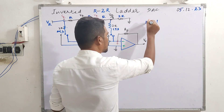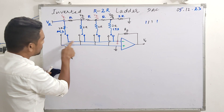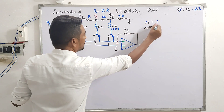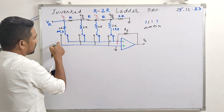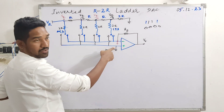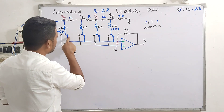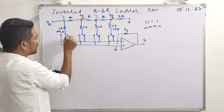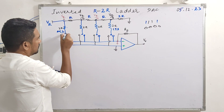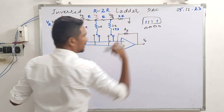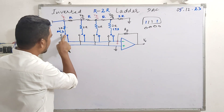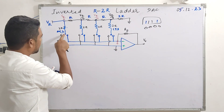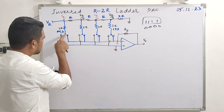If the binary input is 111, all switches will be connected to the inverting terminal. If it is 000, the switches connect to the non-inverting terminal, which is grounded. So when a bit is 1, it connects to the inverting terminal; when it is 0, it connects to the non-inverting terminal through the switch.